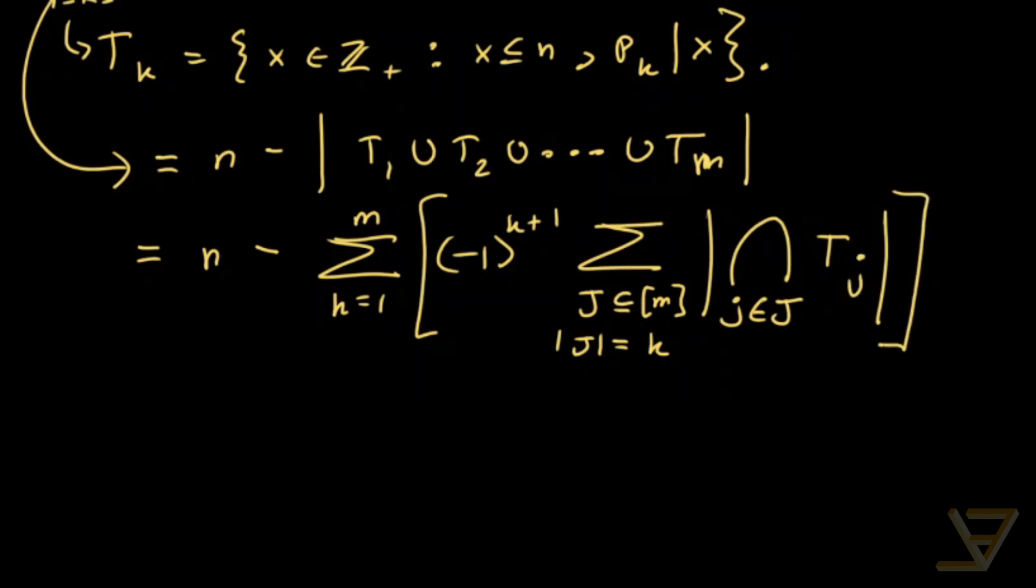Now this might look complicated, but it's going to turn out really nicely. These Tj's, they consist of all the primes with the correct indices that divide the number we're thinking of.